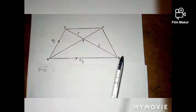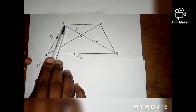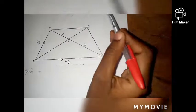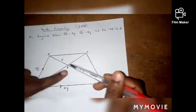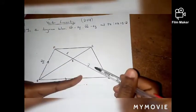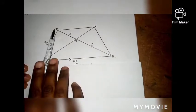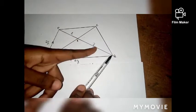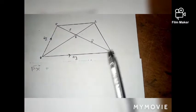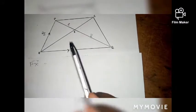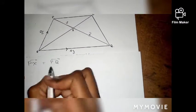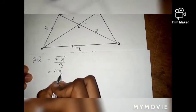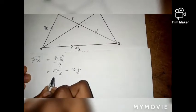Our second question asks us to find the vector PX. In the previous question we found vector PQ, and we've been given the ratio PX to XQ is 1 to 2, giving a total of 3. So if we divide PQ by 3, we get 3 equal parts, and one of those parts is PX. Therefore PX equals PQ over 3, which is 4q minus 2p, all divided by 3.